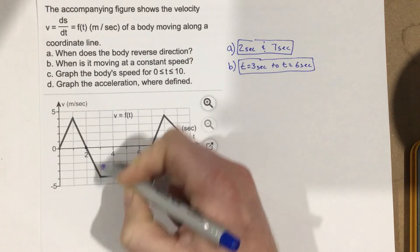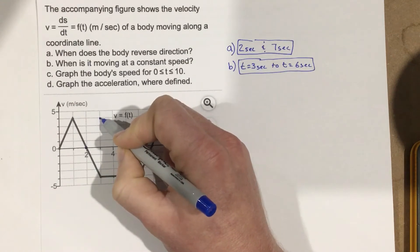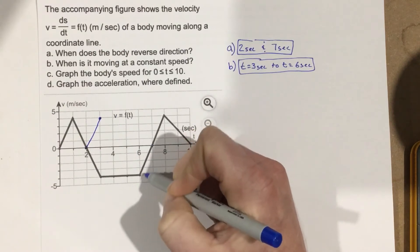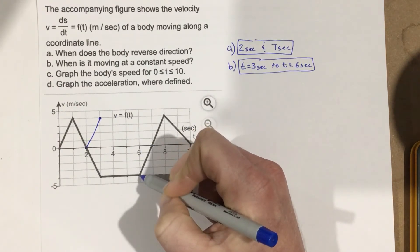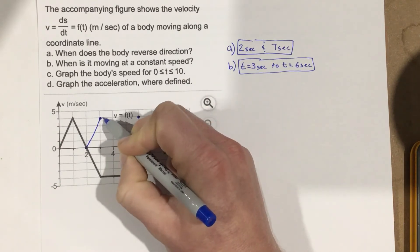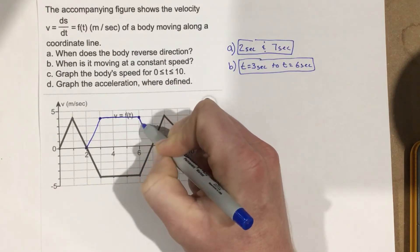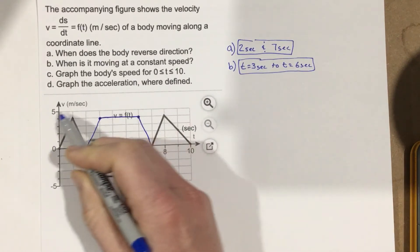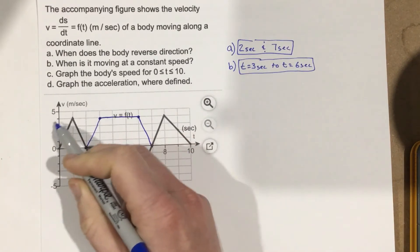So this goes down to negative 4, so that means that the speed would be at 4 here. This is at negative 4 at time equals 6. We're going to put that here, and then we can just connect the dots. So our speed graph would look like just the above portion. That'd be our speed graph up here.